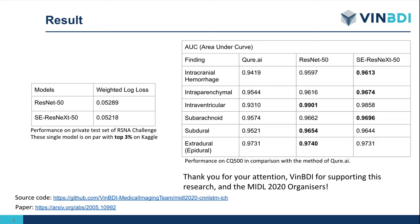For the RSNA challenge, we report performance using the challenge metric of weighted log-loss. Our single model results are on par with the top 3% ranking on the leaderboard, where model ensembles are allowed. The next table reports classification performance in terms of area under the curve on the CQ500 dataset in comparison with the original method. Notably, despite the data distribution shift and not being optimized for scan-level prediction, our models still generalize very well and outperform the original method by a large margin.